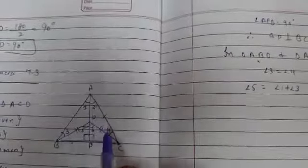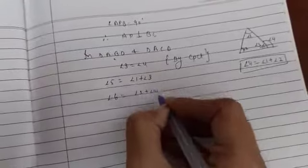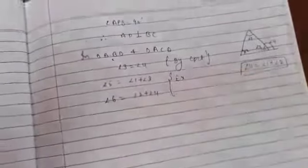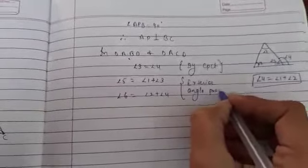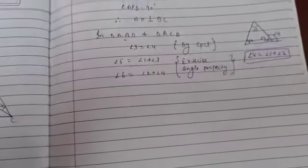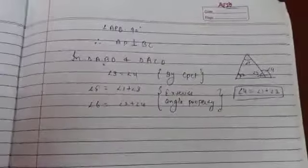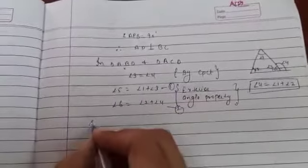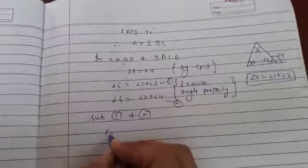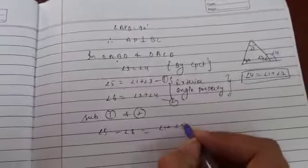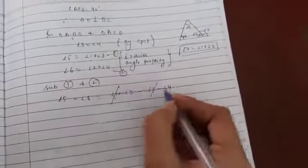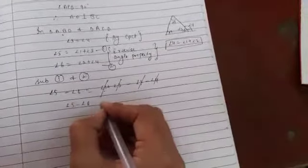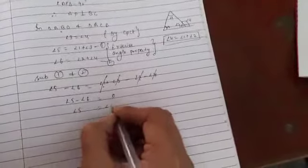So we can write using the exterior angle property. Now we subtract: angle 5 minus angle 6 equals angle 1 plus angle 3 minus angle 2 minus angle 4. Since angle 1 equals angle 2, we can cancel these both. And since angle 3 equals angle 4, we can cancel these both. So angle 5 minus angle 6 equals zero, therefore angle 5 equals angle 6.